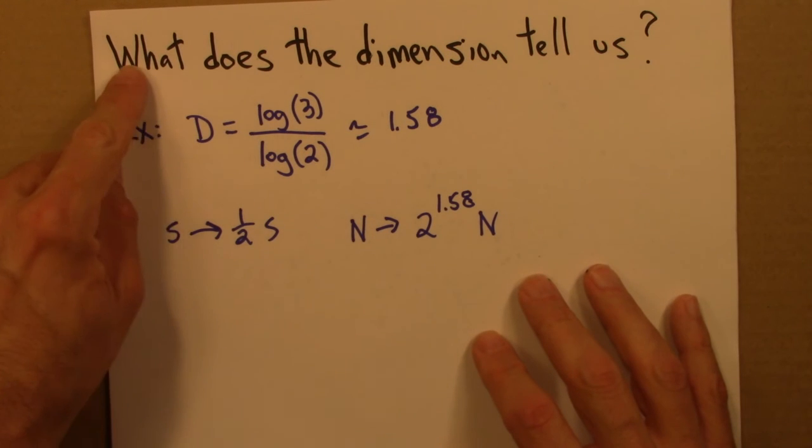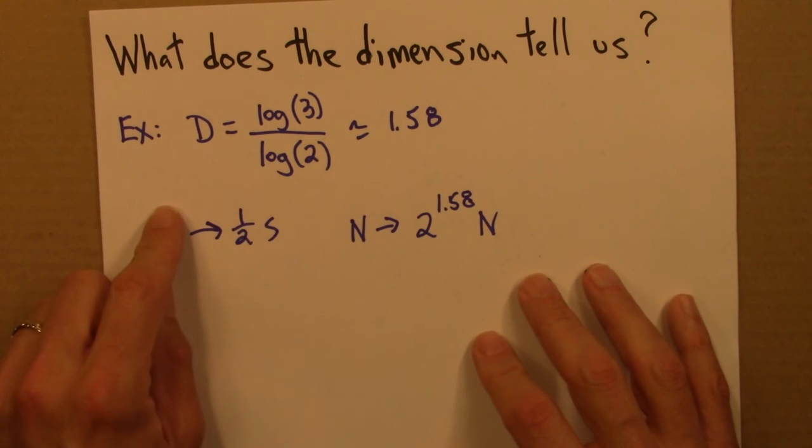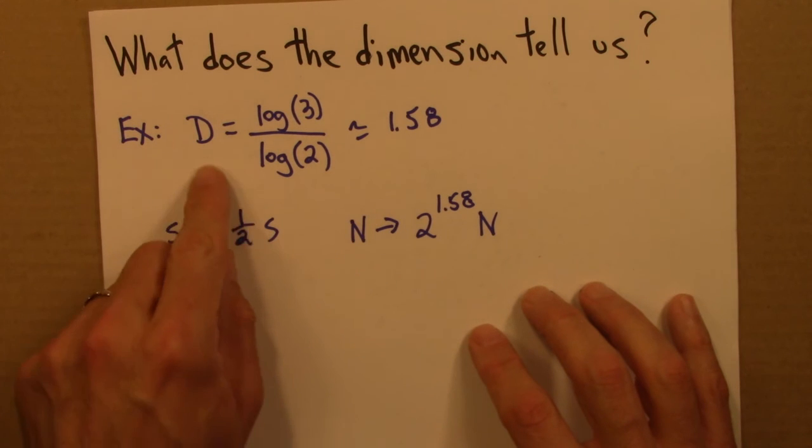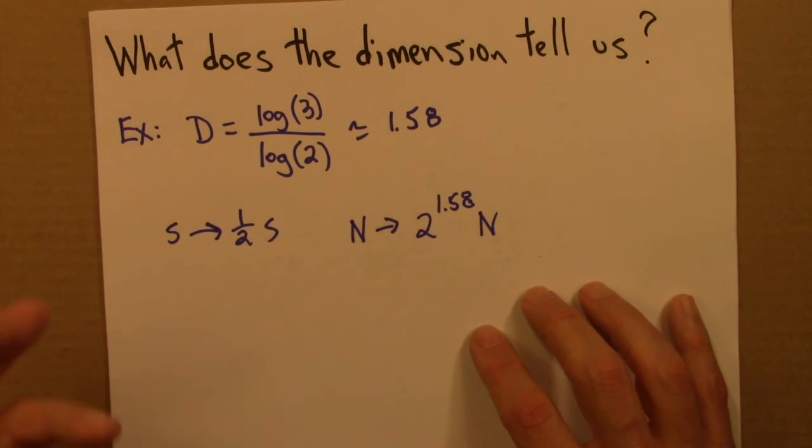So the dimension tells us a lot, but just like ordinary dimensions, these fractal dimensions, box counting and self-similarity, don't tell us everything.